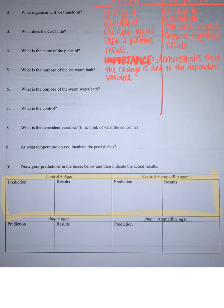these boxes represent the controls we're talking about. Those that do not have the plasmids for the ampicillin resistance gene.